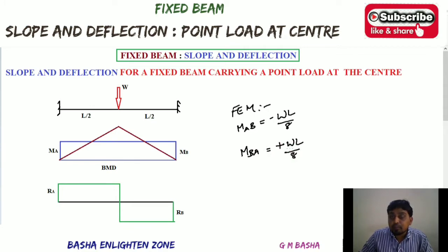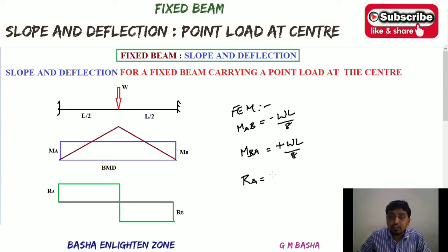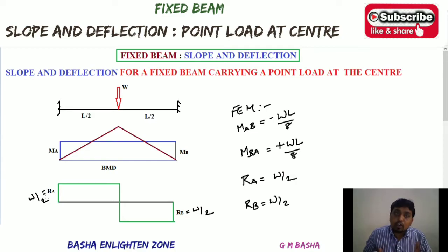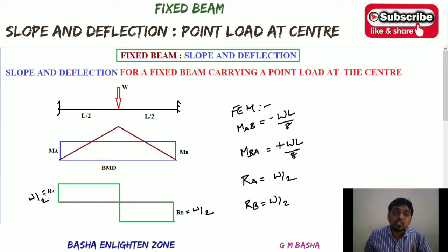We also covered how to draw the bending moment diagram and shear force diagram, and the reactions: reaction at A equals W/2 and reaction at B equals W/2. I uploaded that video to the channel and gave the link in the description. This lecture is a continuation of that — slope and deflection for a fixed beam carrying a point load at the center.